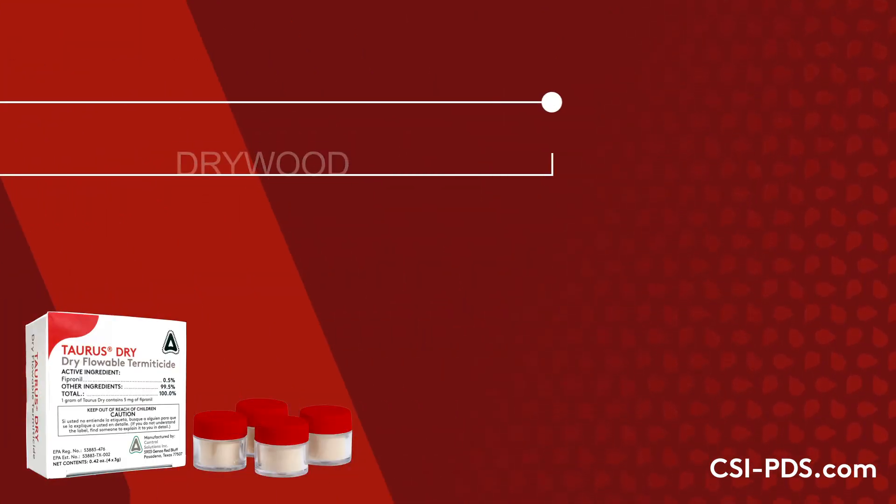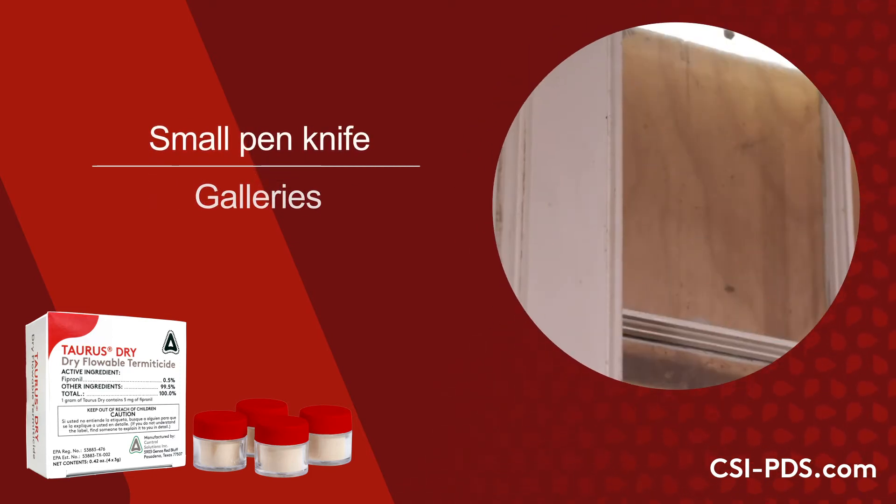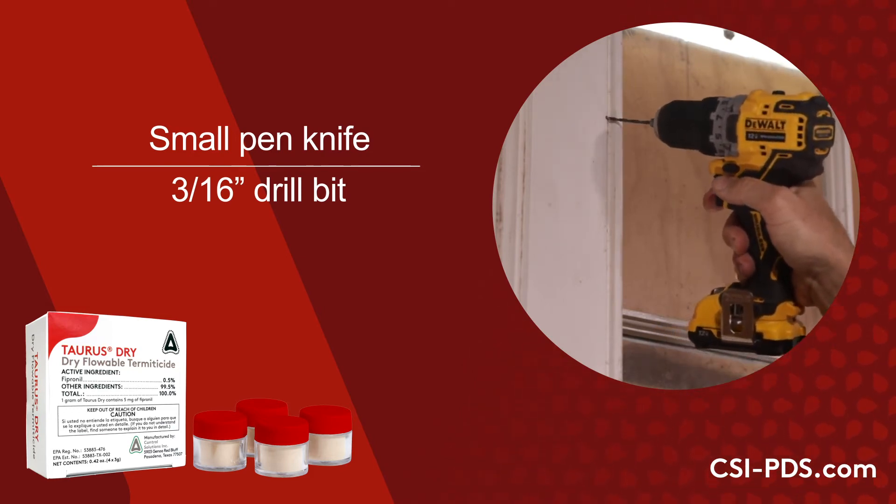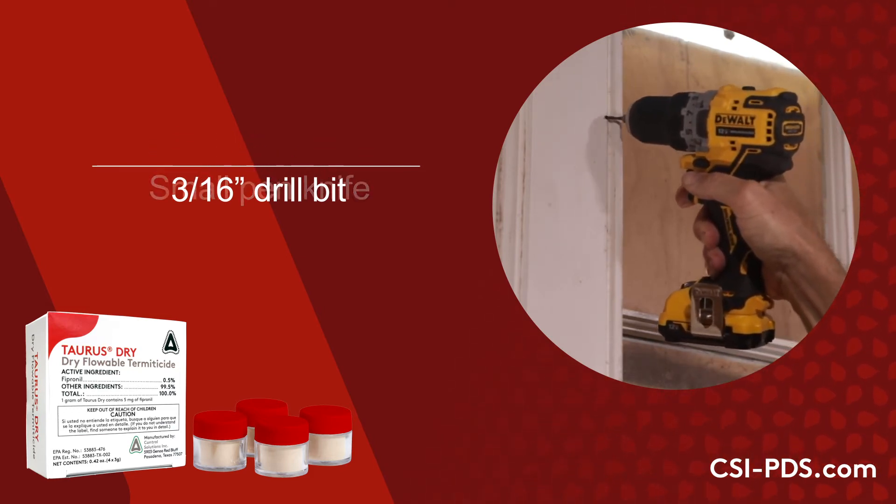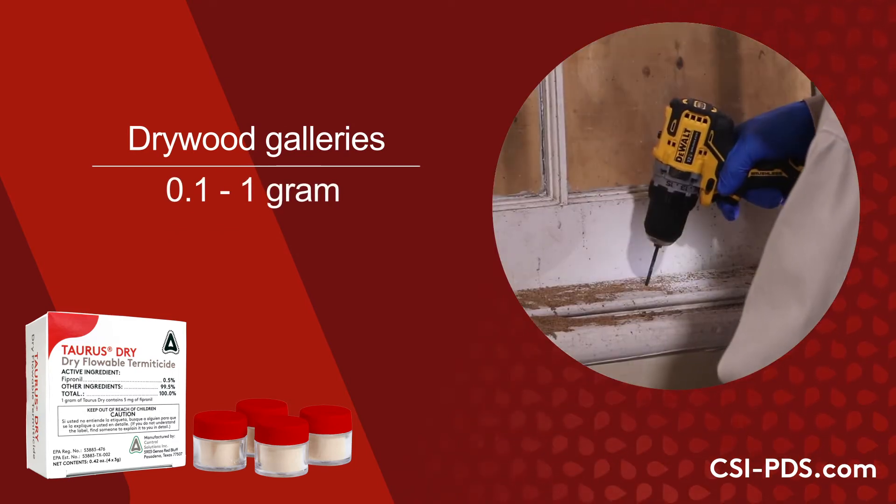For drywood termite galleries, first gain access to the gallery using a small pen knife or, if needed, a 3/16 inch drill bit. Apply Taurus Dry using the PDS to drywood galleries at a rate of 0.1 to 1 gram of product.